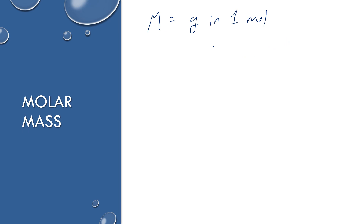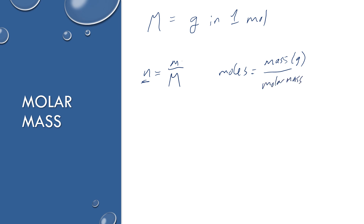The formula for molar mass is given in your data booklet. It's written as n = m/M, lowercase and uppercase, where n is the number of moles, lowercase m is the mass in grams, and uppercase M is the molar mass. The units for molar mass are grams per mole.